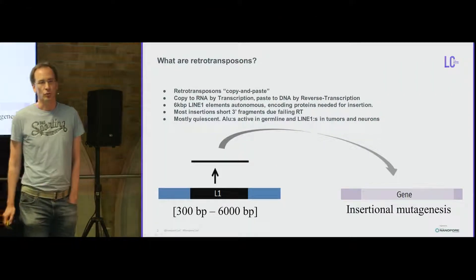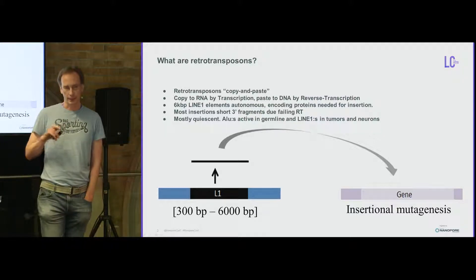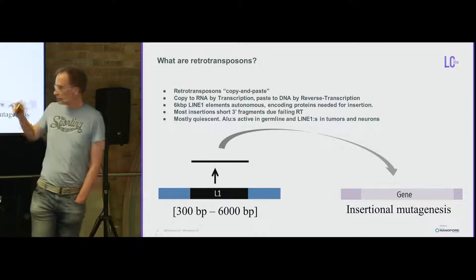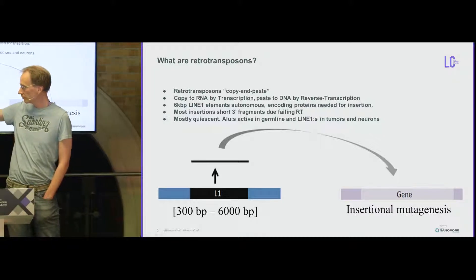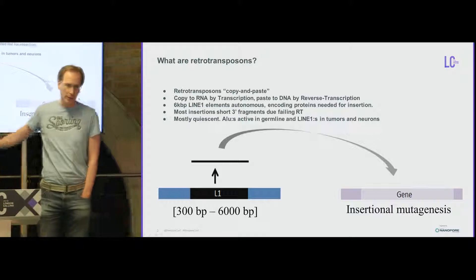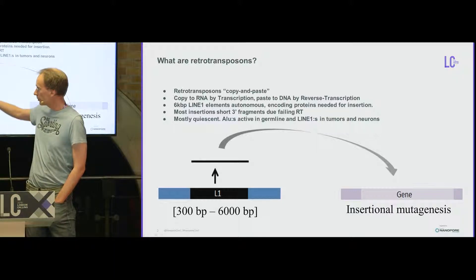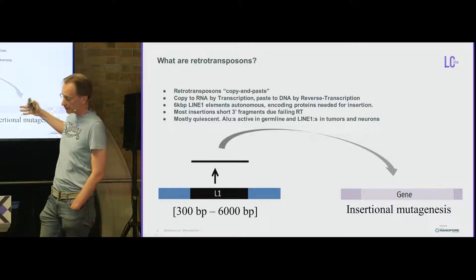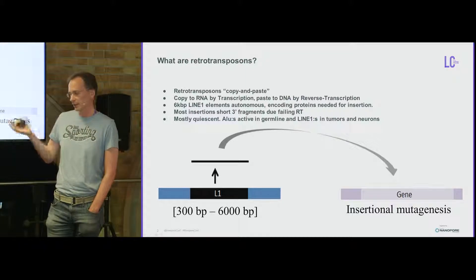A bit of background on retrotransposons. They are copy-paste elements in the genome that copy themselves through an RNA intermediate. You have full-length transposable elements in the genome — 6 KB for LINE-1 elements — copied to RNA by regular transcription and then inserted somewhere else and reverse transcribed. Often the reverse transcription is not very complete, so it ends soon, typically a few hundred bases.